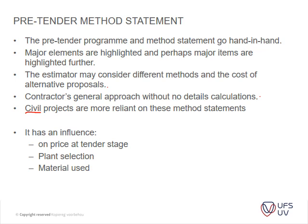Civil projects are more reliant on method statements than building projects. In standard building measurement, there's a lot of detail in the drawings and the QS effectively does the method statement for the contractor. In civil works, a contractor may receive a drawing of a pump house measured as one item and must write a full method statement to price it. There is a key difference between buildings and civil work.